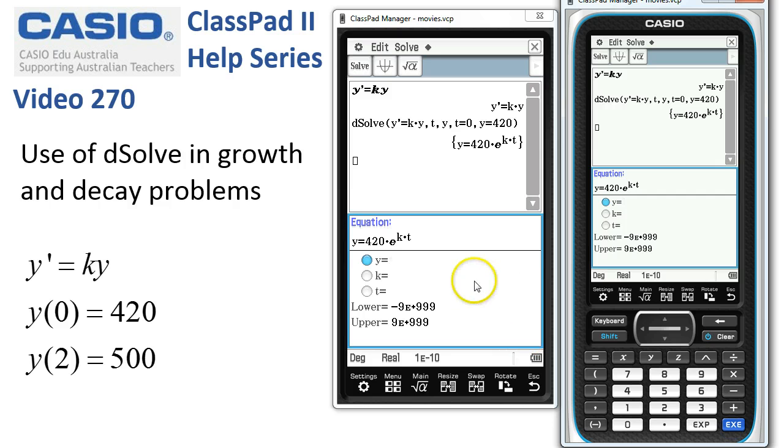Now we can set up to find k because we know that when t is equal to 2 the population has reached 500 and we just need to solve for k. So I'll tap on to solve and OK.